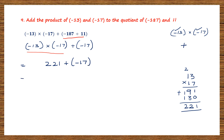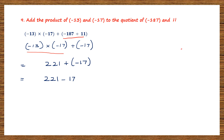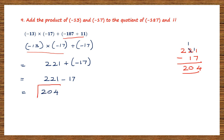Now let's open the brackets. The sign before the bracket is plus, so the sign does not change — we can write minus 17 as it is. Now we subtract: 221 minus 17. We need to borrow: 11 minus 7 is 4; 1 minus 1 is 0; bring down 2. So we have 204. This is our final answer: 204.